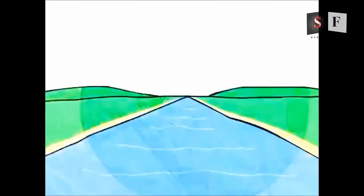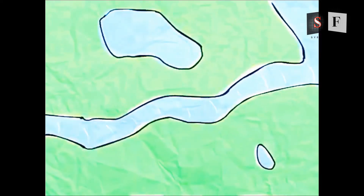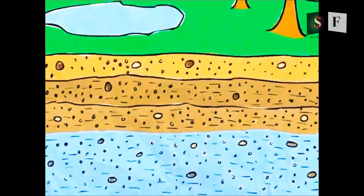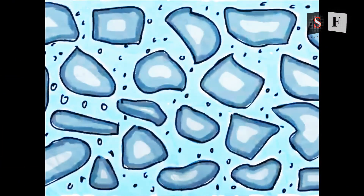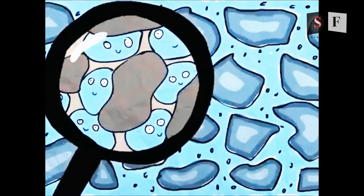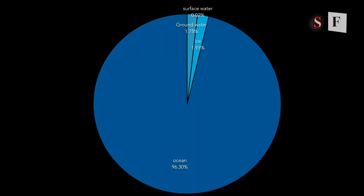Water is present in the form of rivers, lakes, and ponds — the water present on the surface of the earth is called surface water, and the water present inside the ground is called groundwater. The water present inside the tiny gaps between rock particles, soil, and sand is known as groundwater. Water exists as solid (ice), liquid (water), and vapor (water vapor) present in clouds and all around us.